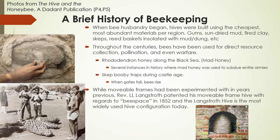Throughout the centuries there have been lots of different uses for bees and their hives. Resource collection is the obvious one, and pollination of course. Warfare is an interesting use for honeybees. Rhododendron honey along the Black Sea — you may have heard of mad honey — causes hallucinations and in too high quantities can actually cause death. There are several instances in the history books of armies being completely subdued by the mad honey in that region. Around here in Oregon, rhododendrons grow wild and people have them in yards, but there's such an abundance of other resources that you're not worried about mad honey in this area.